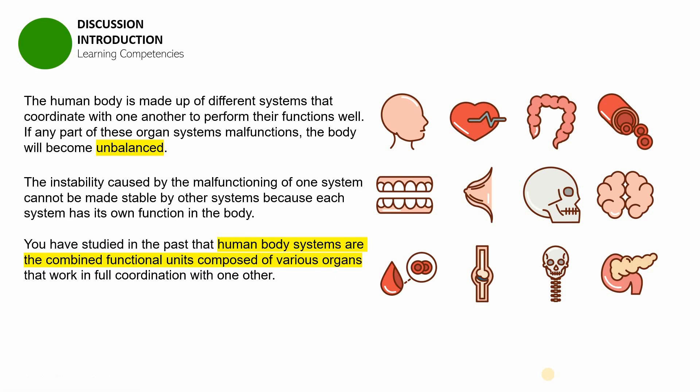If you put tissues together, especially if they are of the same kind, you will be creating an organ. And if you put organs together and group them, you are going to be producing an organ system. If the organ systems are put together, that is going to result in an organism. And then if you put organisms of the same kind together, that will be a population of organisms. If you put various populations together, you will make a community, and if you put organisms with abiotic factors together, the organisms being the biotic factors, that will result in an ecosystem.